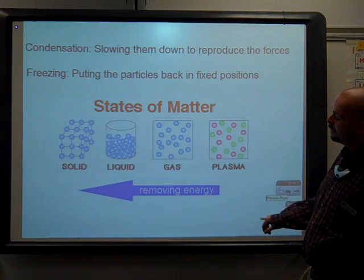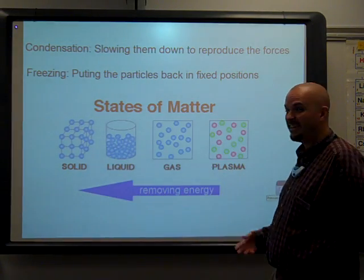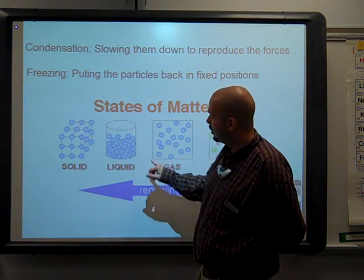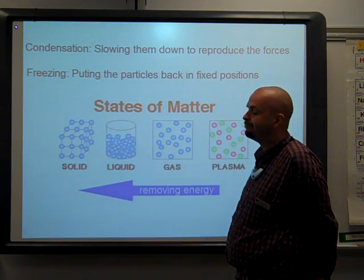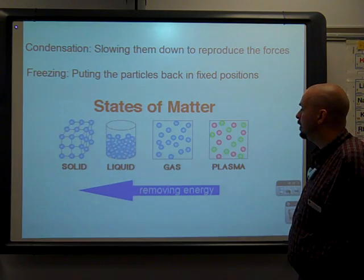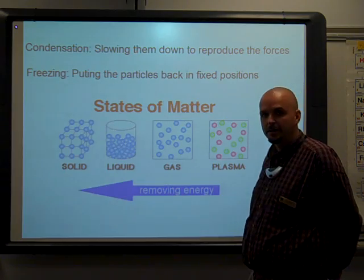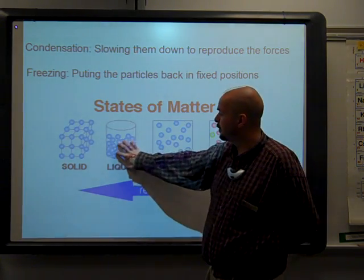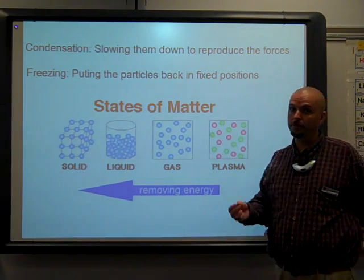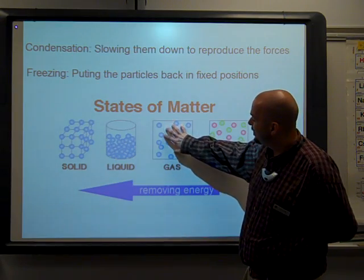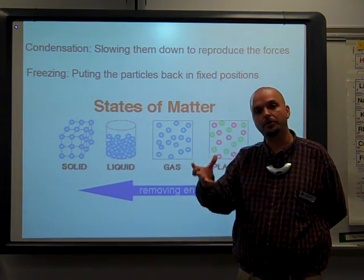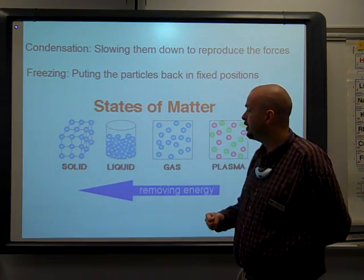Going the other way, removing energy, cooling it down, taking the heat out of it, going from gas to liquid to solid. The change from the gas to the liquid is referred to as condensation. This is the stuff you find on the windshield of cars oftentimes in the morning. This is what you find on the grass, what we call dew. That is condensation. It's water that has been a gas in the atmosphere turned into a liquid on our windshield. To turn a gas into a liquid, we have to slow the particles down enough to reproduce the attractive forces. We have to slow them down and get them close enough together where they attract each other again. When they start to attract each other again, they start to group together and form those drops, those liquids that we find.